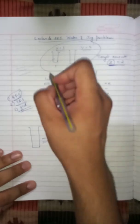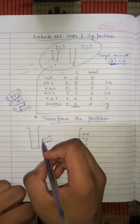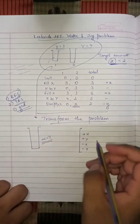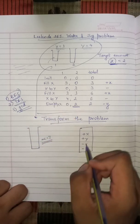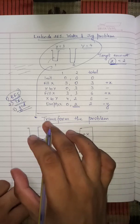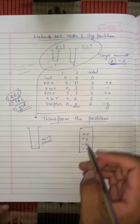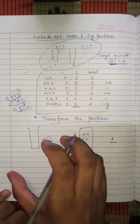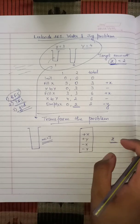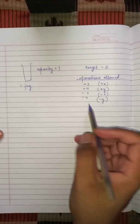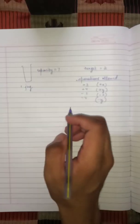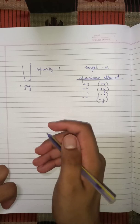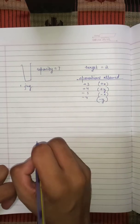Essentially this problem has been reduced to: we have one jug of max capacity 7, and we can perform these four operations — plus x, plus y, minus x, minus y — and we want to reach z. This is effectively what the problem reduces to. Now let's dry run with a graph.